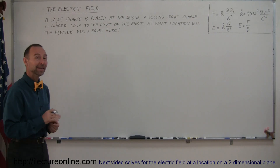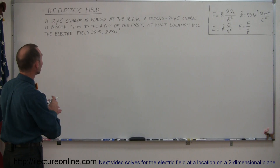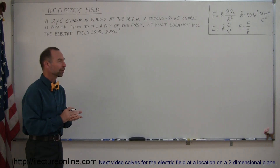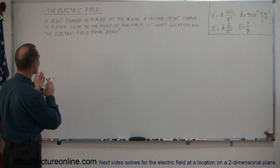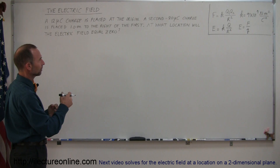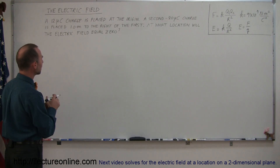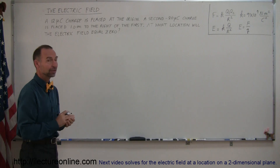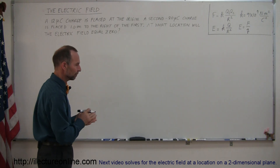Welcome to iLecture Online. Here's another example of how you work with problems dealing with electric field. We have a 12 microcoulomb charge placed at the origin and a second minus 8 microcoulomb charge placed one meter to the right of the first charge. The question asks: at what location will the electric field equal zero?